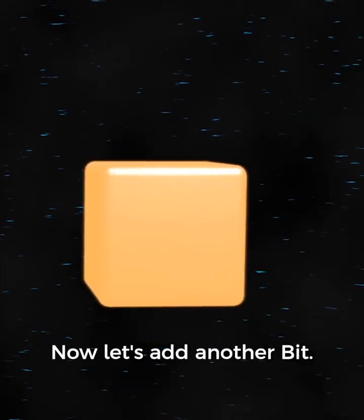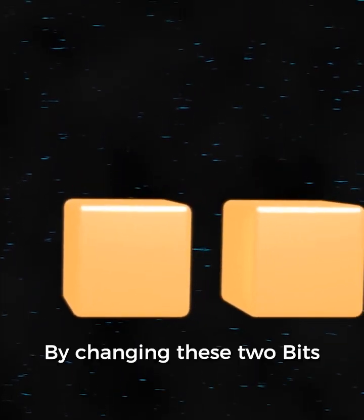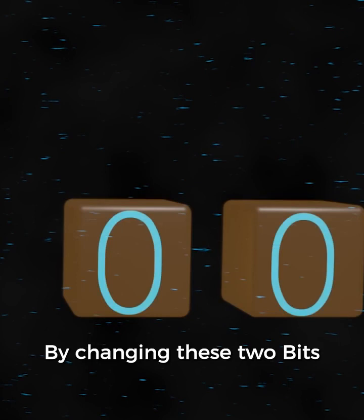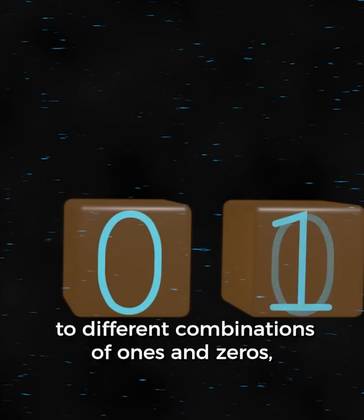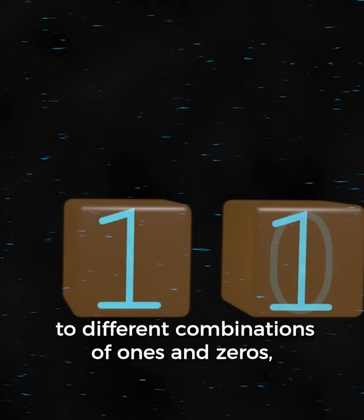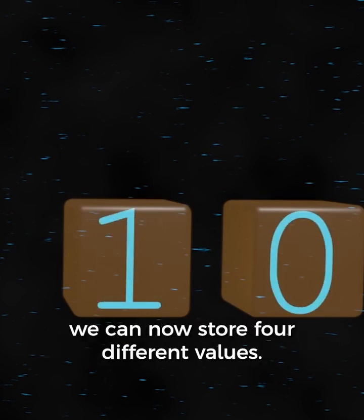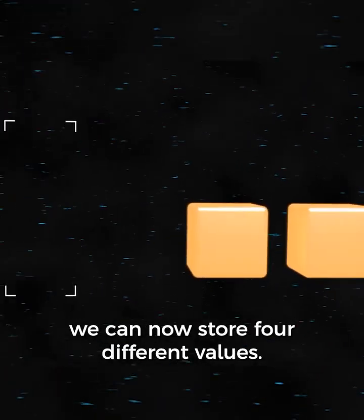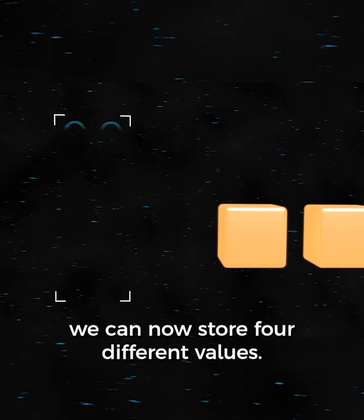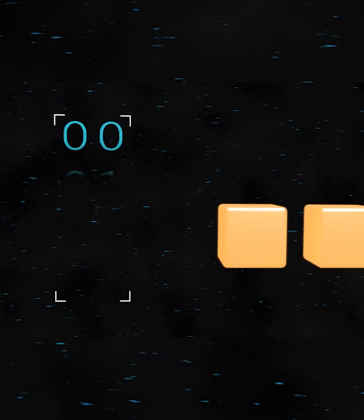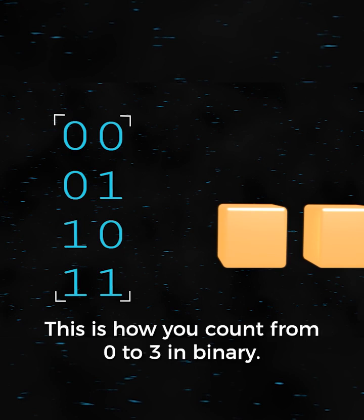Now let's add another bit. By changing these two bits to different combinations of ones and zeros, we can now store four different values: 00, 01, 10, and 11. This is how you count from zero to three in binary.